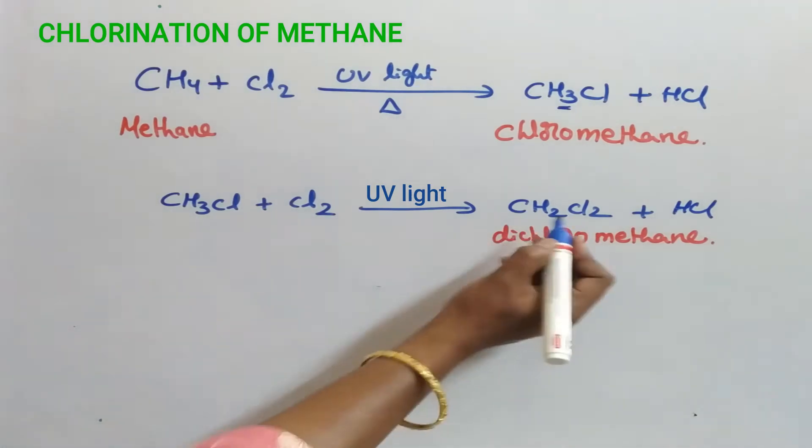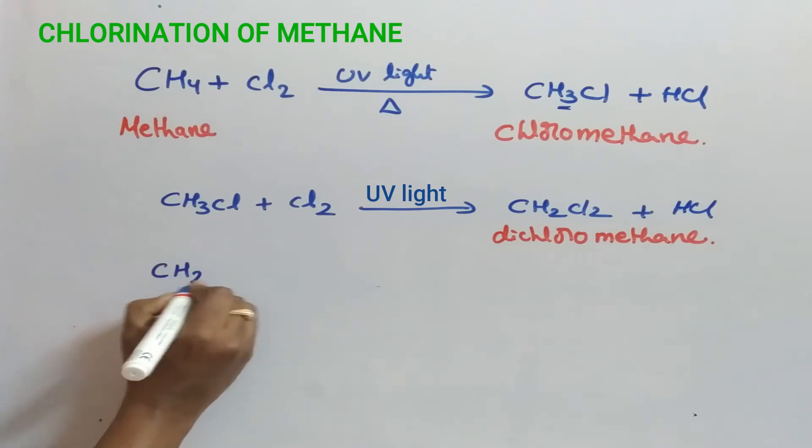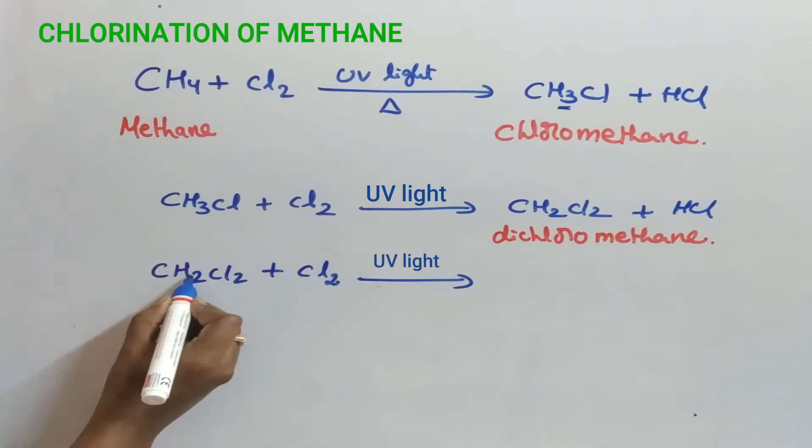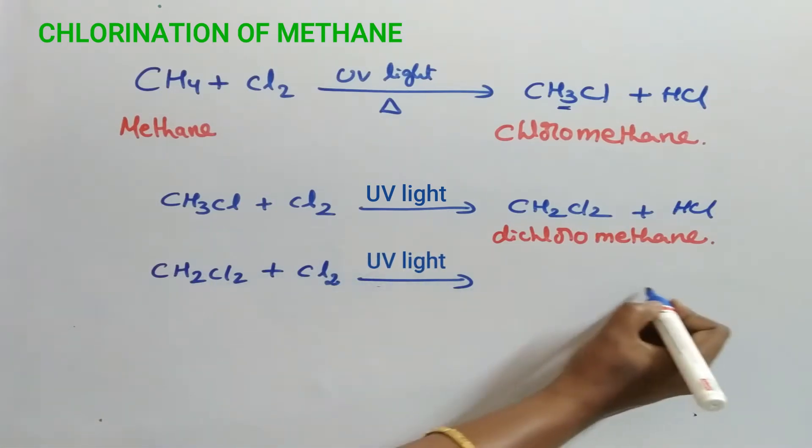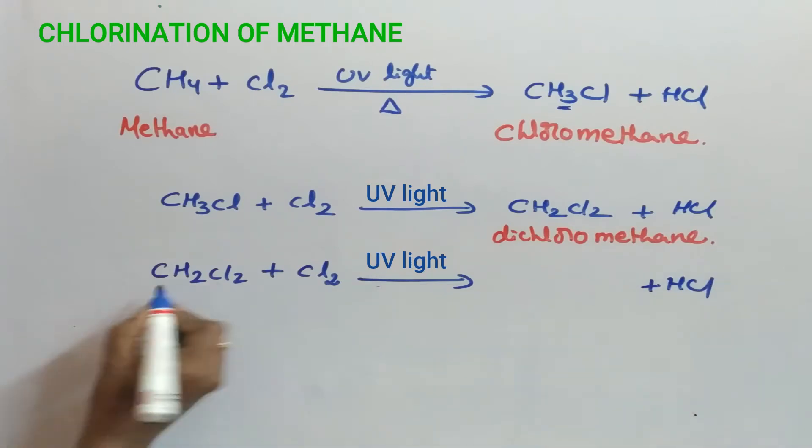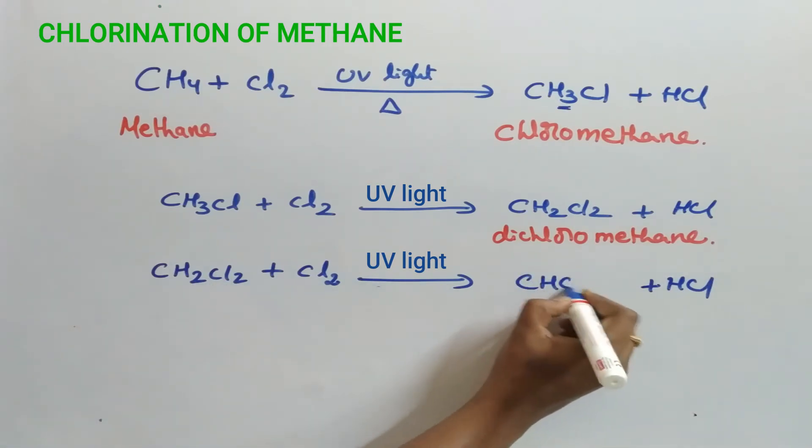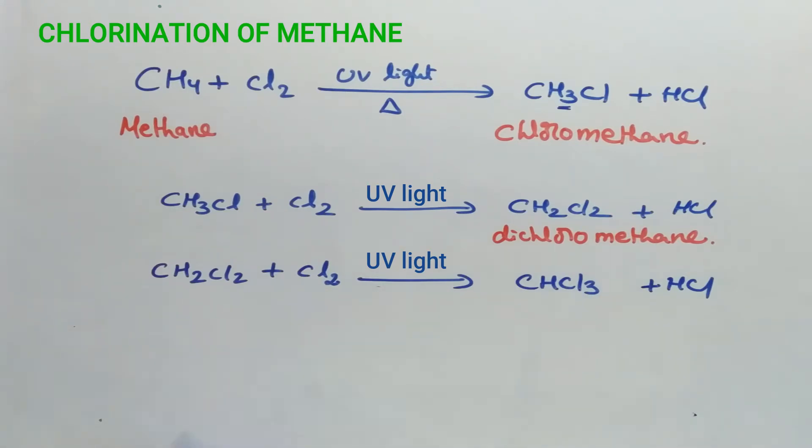Next, again this dichloromethane, that is CH2Cl2, reacts with chlorine. Here one of the hydrogens is replaced by chlorine, forming HCl and now CHCl3. It is known as trichloromethane. It is popularly known as chloroform.